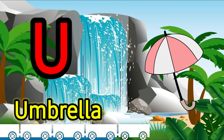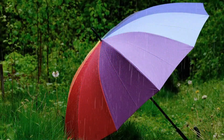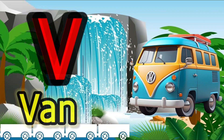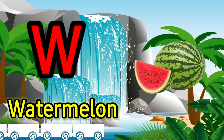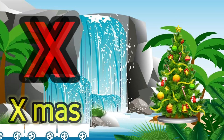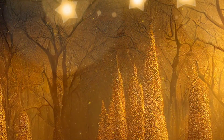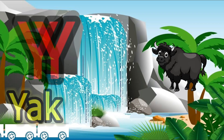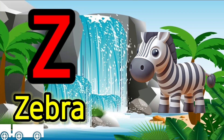U for umbrella, V for van, W for watermelon, X for X-mas, Y for yak, Z for zebra.